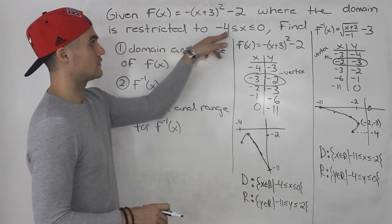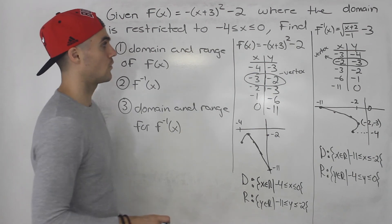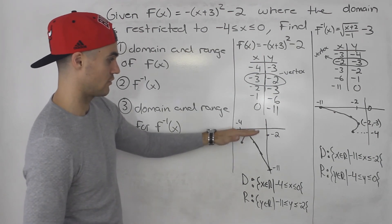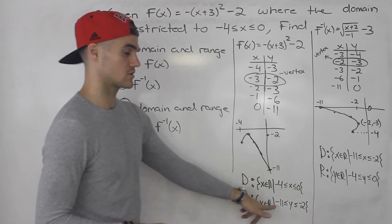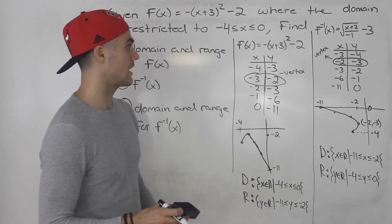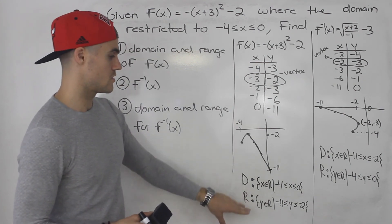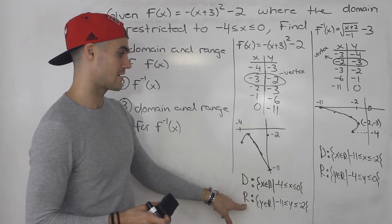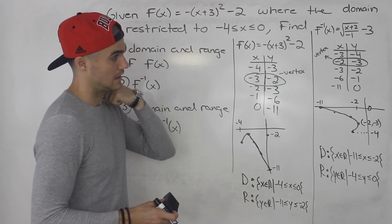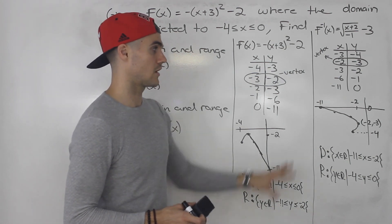So if the domain is restricted for a parabola, the trick is finding how the range is going to be restricted. My suggestion: make a table, graph it out, and then visually get the restrictions on the range. And then the inverse is pretty easy from there — everything is just interchanged.